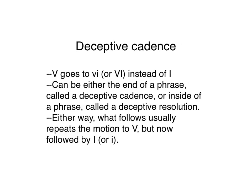Let's look at the deceptive cadence first. Five goes to six instead of one. This can be either at the end of the phrase, where we call it a deceptive cadence, or inside of the phrase, called a deceptive resolution. Let me show you the motion to six, and then we can follow it two different ways.